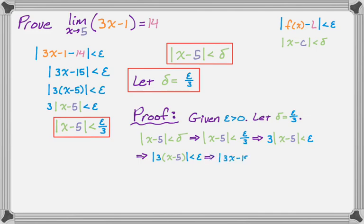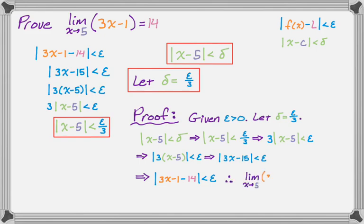Distributing gives us 3x minus 15 is less than epsilon, which is basically done — except I need to rewrite it as the absolute value of f of x minus L is less than epsilon. So that becomes the absolute value of (3x minus 1) minus 14 is less than epsilon. We showed that if the absolute value of x minus 5 is less than delta, where delta equals epsilon over 3, then the absolute value of f of x minus the limit is less than epsilon. Therefore, we have established and proved this limit.